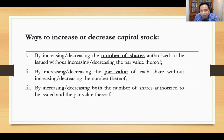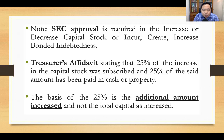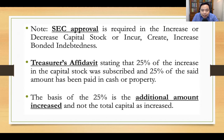There are several ways to increase or decrease capital stock: you can increase the number of shares, increase the par value of each share, or both. The approval of the Securities and Exchange Commission is required to exercise the power to increase or decrease capital stock or to incur, create, or increase bonded indebtedness. One requirement is a treasurer's affidavit stating that 25% of the increase in capital stock was subscribed and at least 25% of that subscription has been paid in cash or property. The basis of the 25% is the additional amount increased — not the total capital as increased.